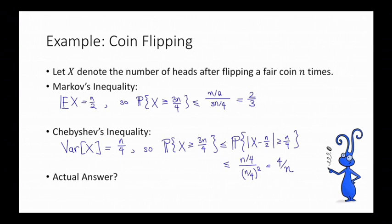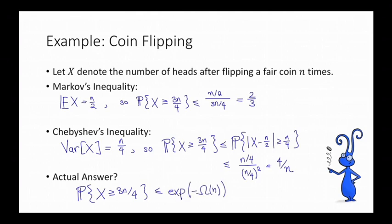What's the right answer? Based on the central limit theorem, you might expect that the probability that x is greater than or equal to 3n/4 is bounded by something exponential in n. In fact, this turns out to be the case, and we'll see this when we talk about Chernoff bounds soon. But for now, this is a good example of using both Markov's and Chebyshev's inequality to bound the probability that x is too large.